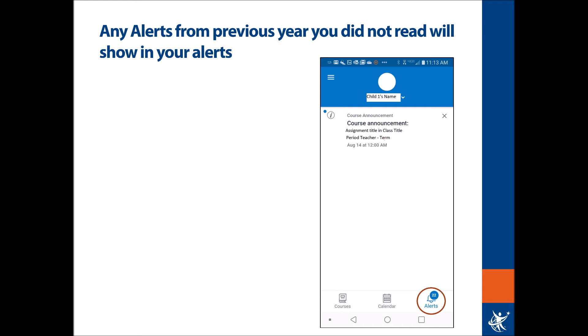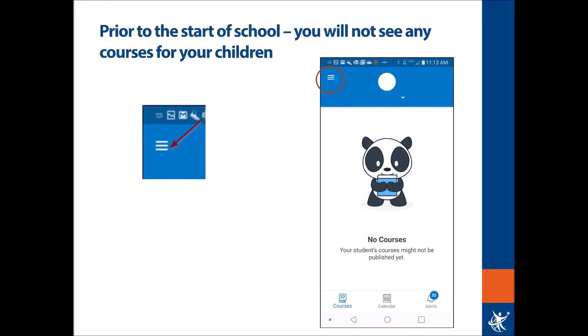Any course announcements delivered to the students will be available for the parents who are observing them in the app. Beyond the courses, calendar, and alerts that appear on the main page, you will note in the upper left-hand corner of the app three parallel lines. If you tap there, there's another menu, and on that menu are other features within the parent Canvas app. Let's take a look at those.